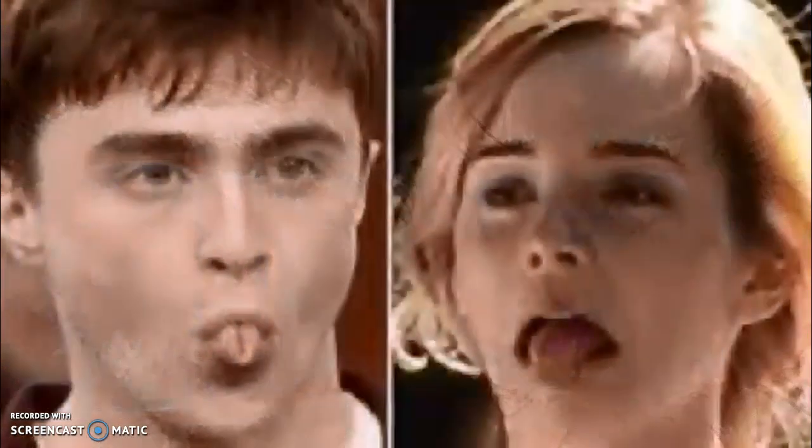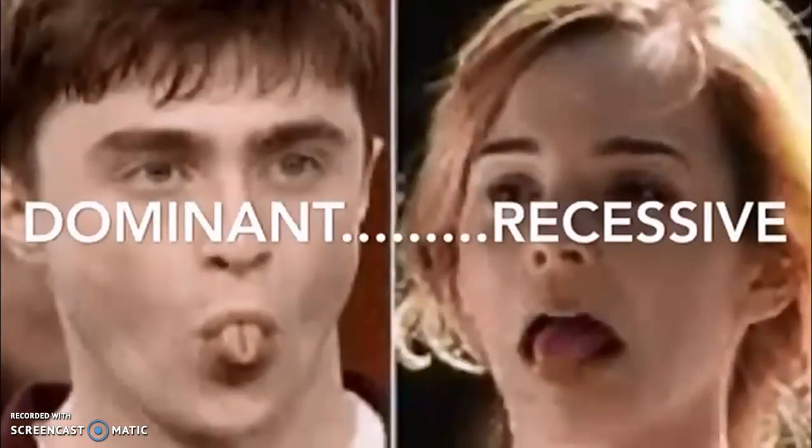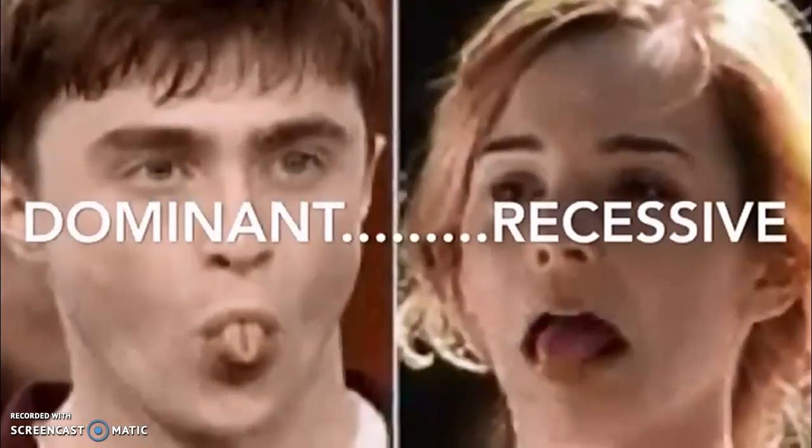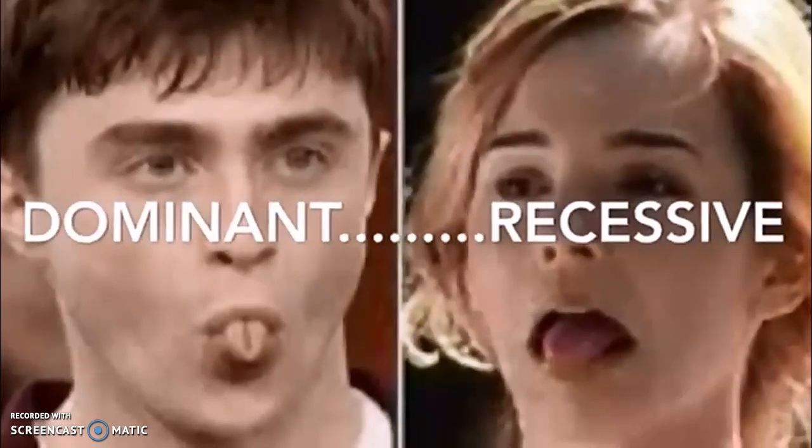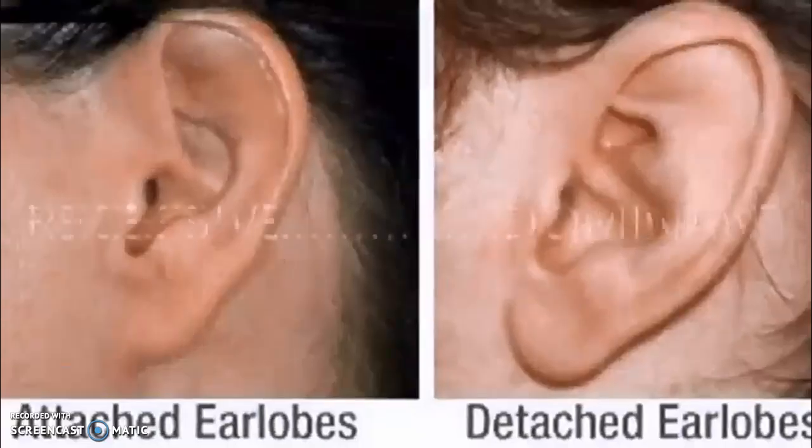Recessive trait. A trait that is blocked by a dominant trait. You have to have two for this trait to show. It takes two parts to make a trait, one each from mom and dad. If at least one of them is dominant, that trait for sure you'll have. Can you roll your tongue? Try it and see. Tongue rolling trait is dominant. If you try it and it can't be done, the recessive trait came from both parents.